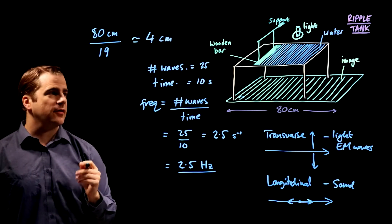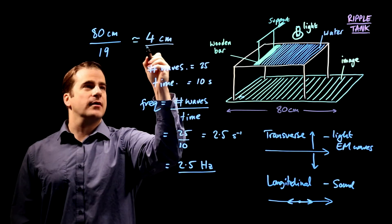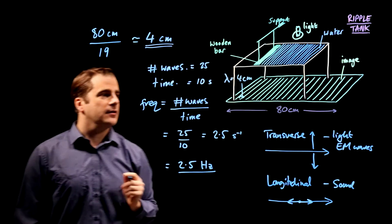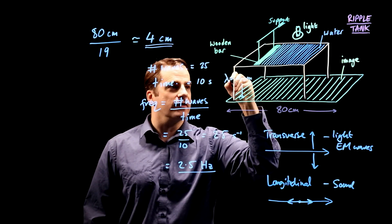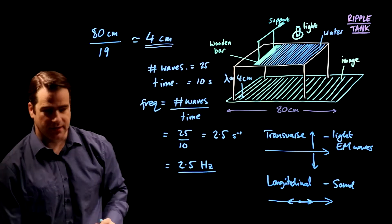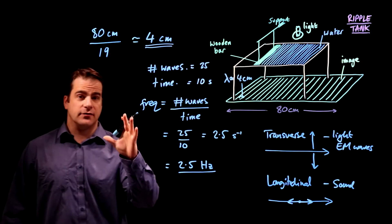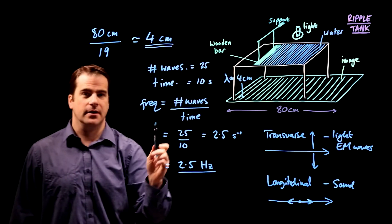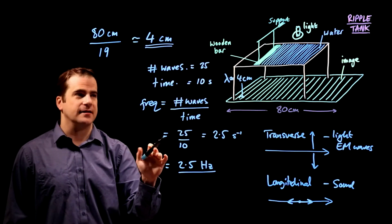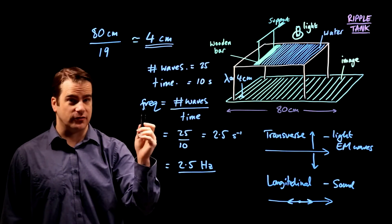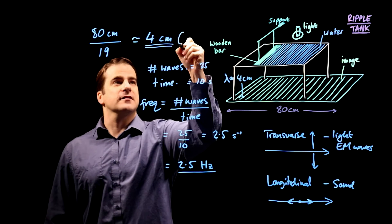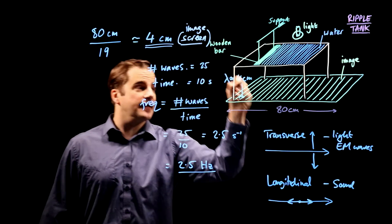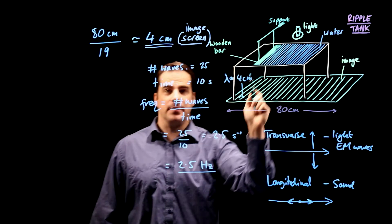So they only want an approximate answer. So the wavelength is approximately four centimetres. Symbol of wavelength is lambda. Lambda roughly equals approximately four centimetres. It's very important to realise that that four centimetres is the wavelength as seen on the screen. In the question, it actually says, what is the approximate wavelength as seen on the screen? So I'll just stress that here, as seen on the screen or the image. The actual wavelength in the ripple tank is different.